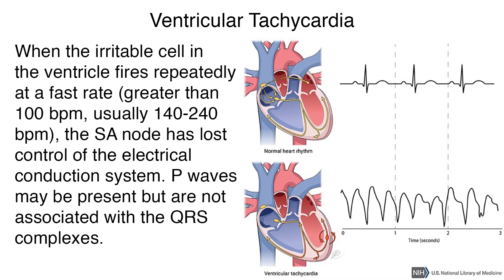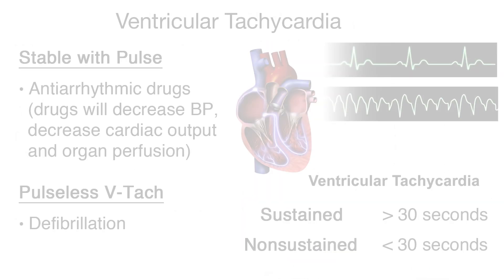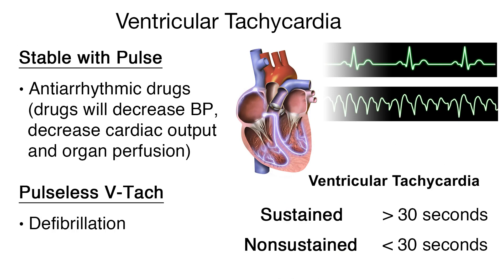Three or more consecutive PVCs result in ventricular tachycardia, often referred to as VTAC, which is a life-threatening arrhythmia. When the irritable cell in the ventricle fires repeatedly at a fast rate, usually 140 to 240 beats per minute, the SA node has lost control of the electrical conduction system. P waves may be present but are not associated with the QRS complexes. VTAC is classified as sustained, which lasts more than 30 seconds, or non-sustained, in which the tachycardia stops before 30 seconds.